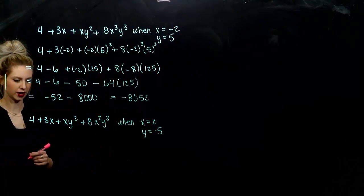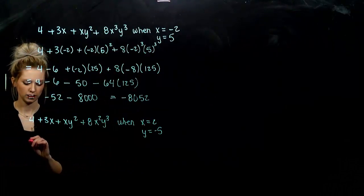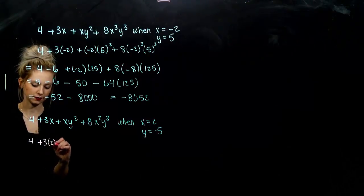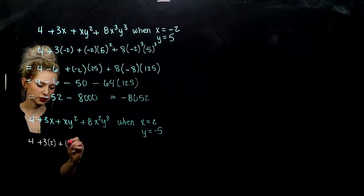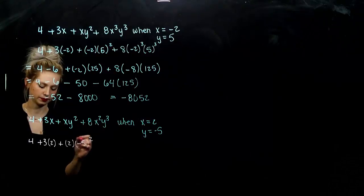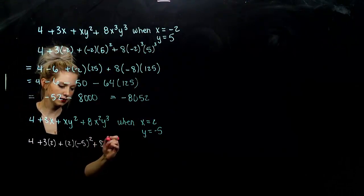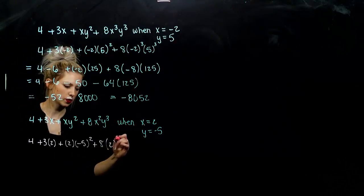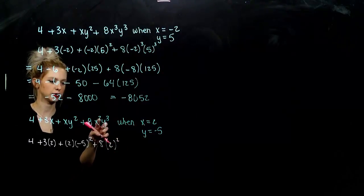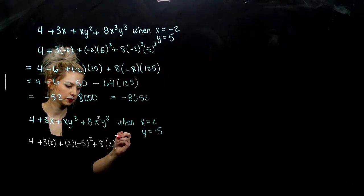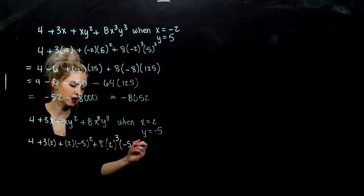So as we start to evaluate, what's going to be different? 4 is still going to stay the same. Now I've got 3 times a positive 2 plus 2 times a negative 5 squared. I'm adding to that 8, 2 cubed, and negative 5 cubed.